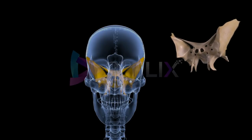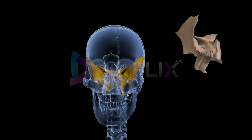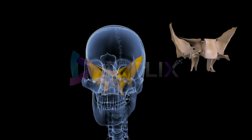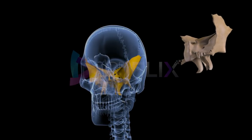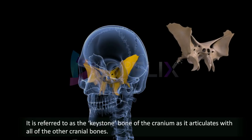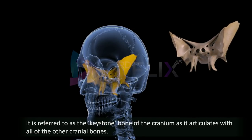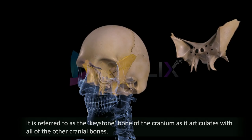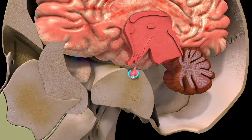Sphenoid bone: It is present in the middle part of the base of the cranium. It is a butterfly- or bat-shaped bone, with two wing-like processes. It is referred to as the keystone bone of the cranium, as it articulates with all of the other cranial bones. It has a pit-like depression called the sella turcica, which lodges the pituitary gland.